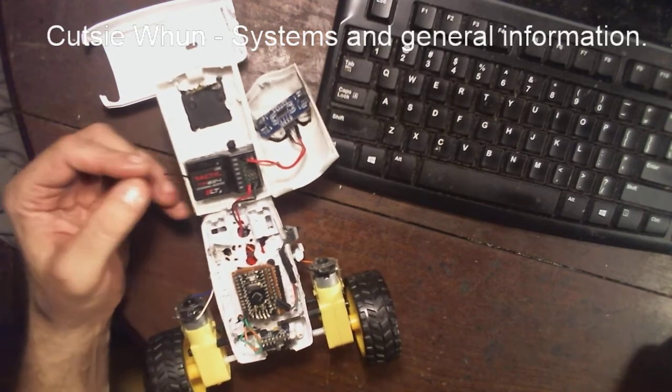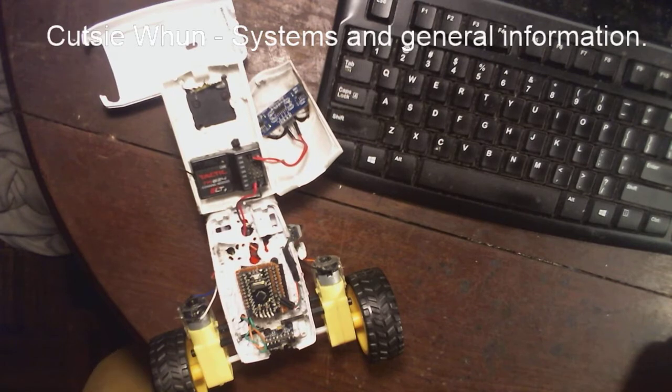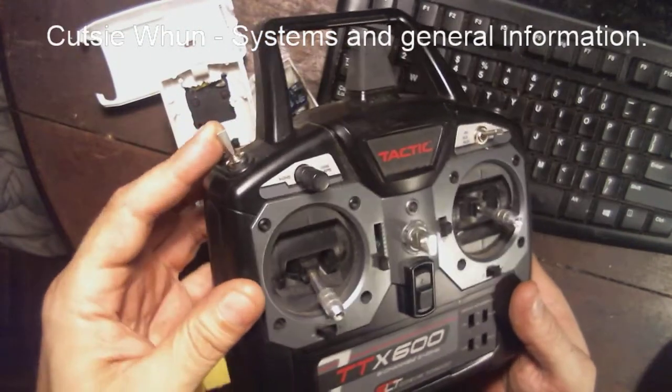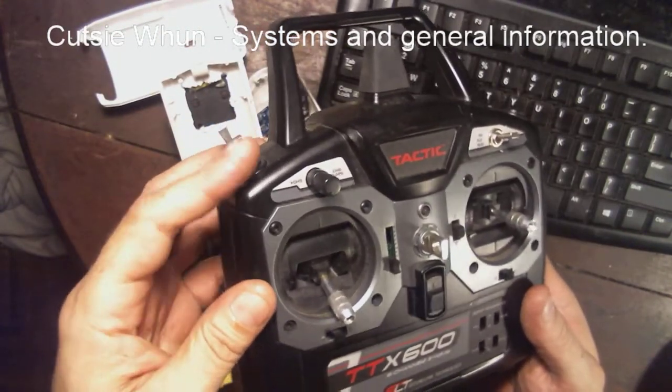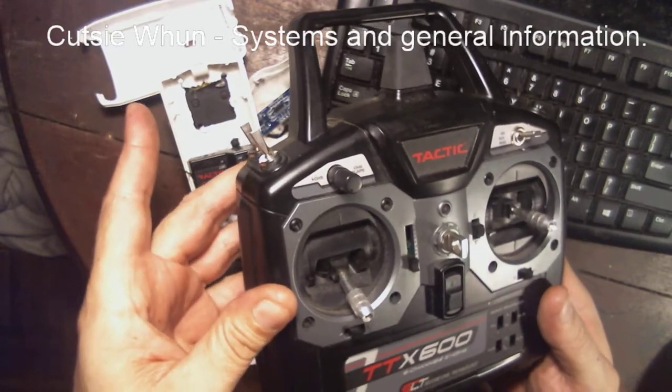But I decided to go with the 6-channel. With the 6-channel, I can do more. I can lock one tire, or on the radio it's got an arming switch for my quad. So I flip that switch and it arms the quad. The motors will turn, and flip it back and it unarms the quad.